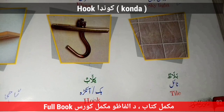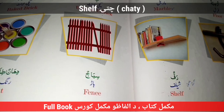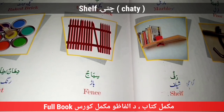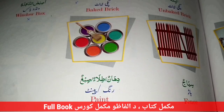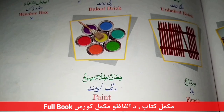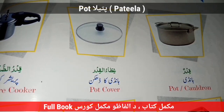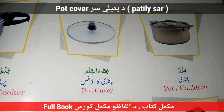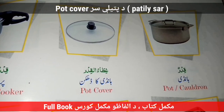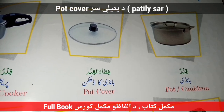Window Box. Tile. Hook — Kunda. Shelf — Chate. Fence — Bar. Paint — Rung. Pot — Patilia — Ya Lohe. Pot Cover — The Patili Sir.